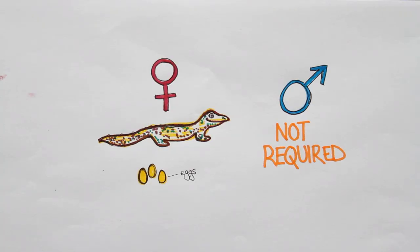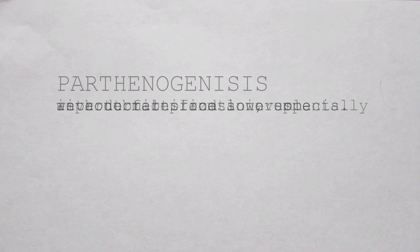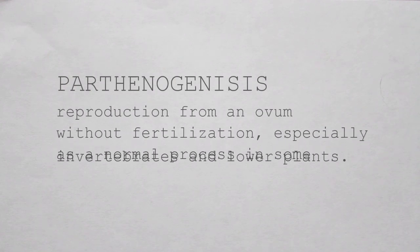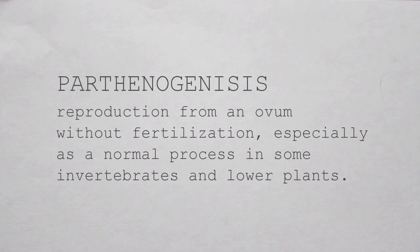In this video I will attempt to explain how one animal can reproduce without a mate, and a theory as to why they do this. The definition of parthenogenesis is reproduction from an ovum without fertilisation, especially as a normal process in some invertebrates and lower plants.